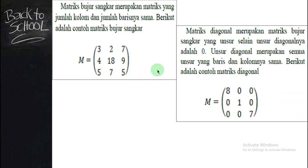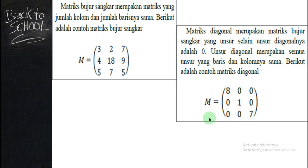Kita menuju ke matriks diagonal. Matriks diagonal adalah matriks bujur sangkar atau matriks persegi yang unsur selain unsur diagonalnya adalah 0. Perhatikan, selain unsur diagonal — jadi diagonal utamanya tidak boleh 0. Silakan ditulis angkanya berapa, boleh negatif, boleh positif, boleh pecahan. Yang lainnya 0. Ingat, karena dia bujur sangkar, otomatis baris dan kolomnya sama. Jika Anda diminta membuat matriks diagonal dengan ukuran 3 kali 4, jelas dia tidak bisa, karena syaratnya harus persegi.